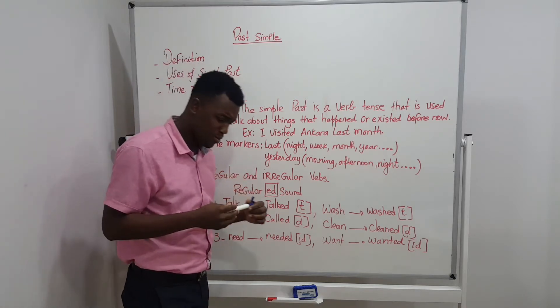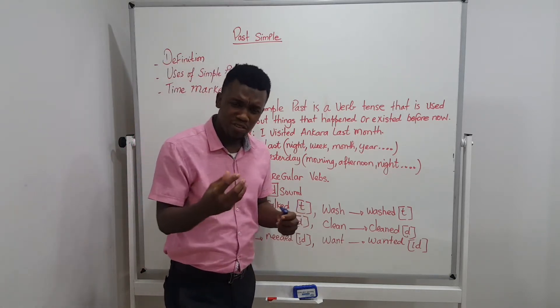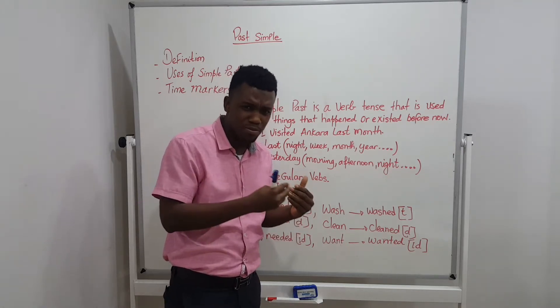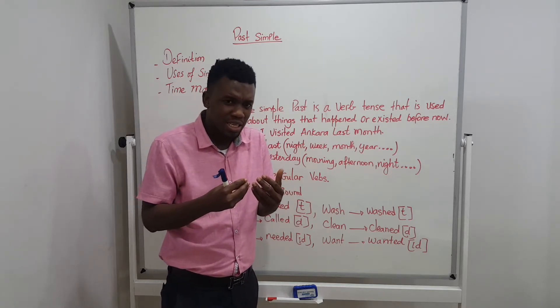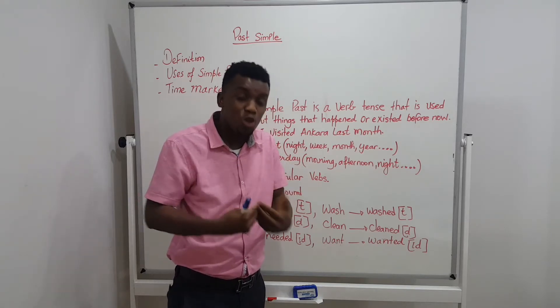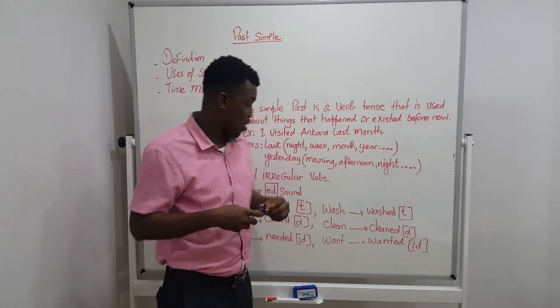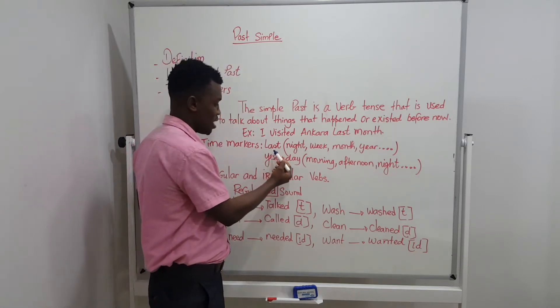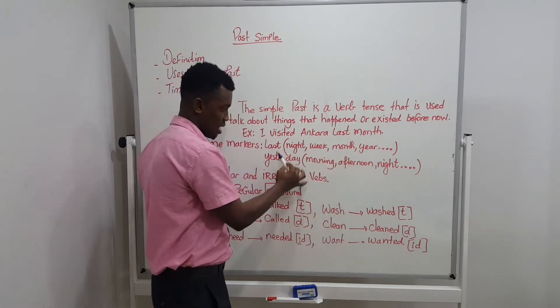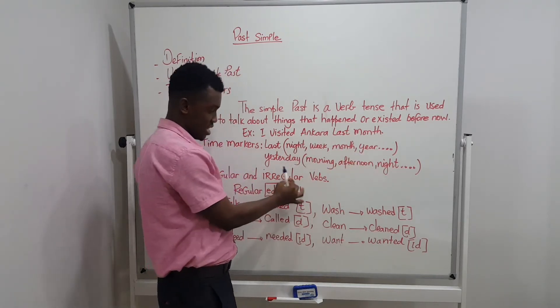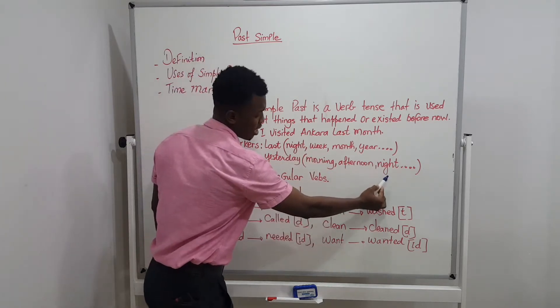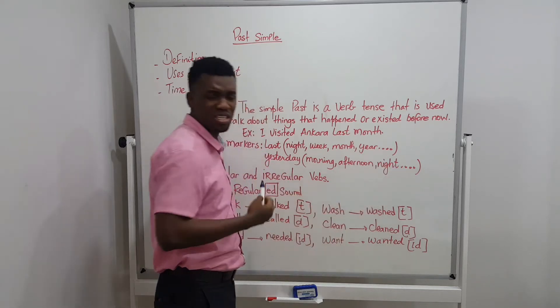And we have time markers. Time markers give the precision of the action. Because when you use time markers, you help the person who is listening to you to understand what you are talking about. For example, you say, last night, last week, last month, last year, yesterday, yesterday morning, yesterday afternoon, yesterday night, the day before yesterday.